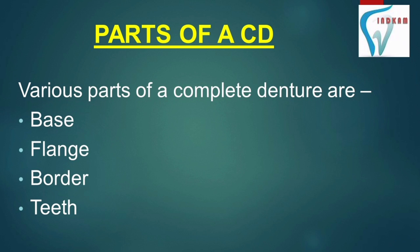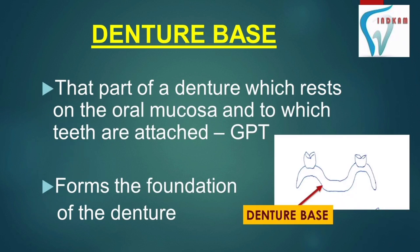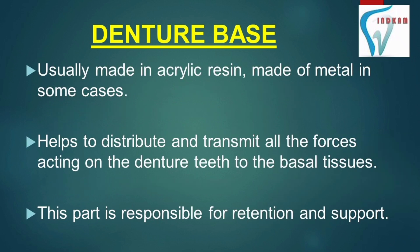Now coming to the parts of a complete denture. A complete denture has the following parts: base, flange, border, and teeth. The denture base is that part of a denture which rests on the oral mucosa and to which teeth are attached. Denture base forms the foundation of any denture and is usually made up of acrylic resin, though metal can also be used in some cases.